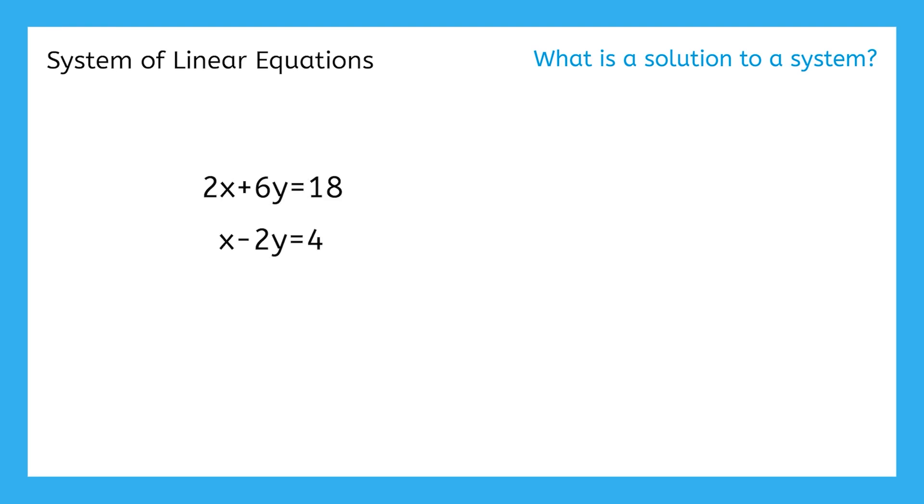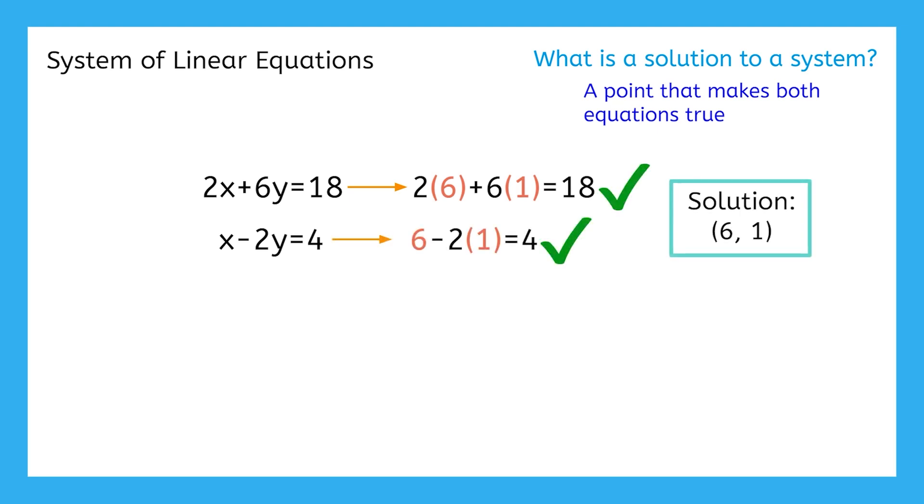Here's an example of a system where both linear equations use the variables x and y. A point is a solution to a system when it's a solution to both individual equations, and therefore makes both equations true. For example, here, an x value of 6 and a y value of 1 makes the first equation true, and also the second equation. So that's a solution to the system.